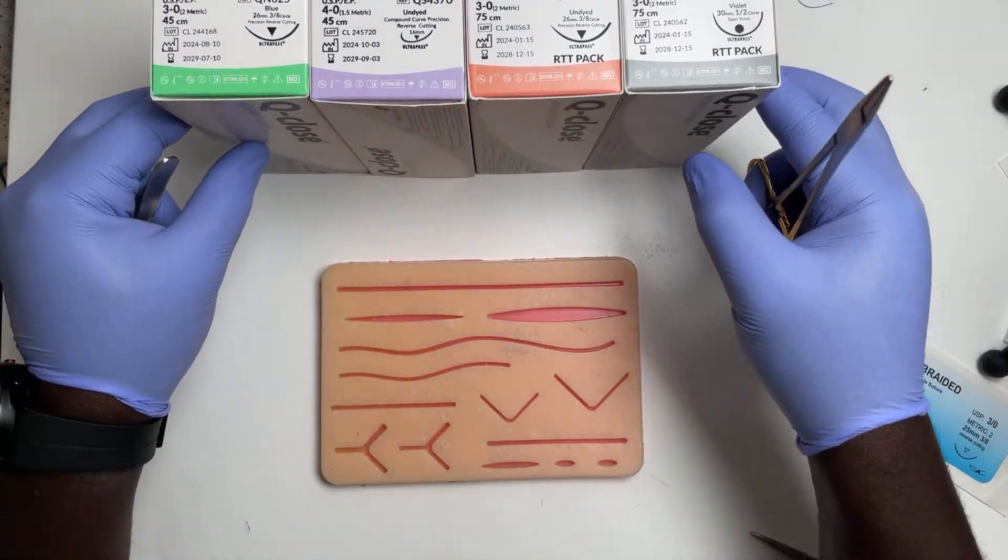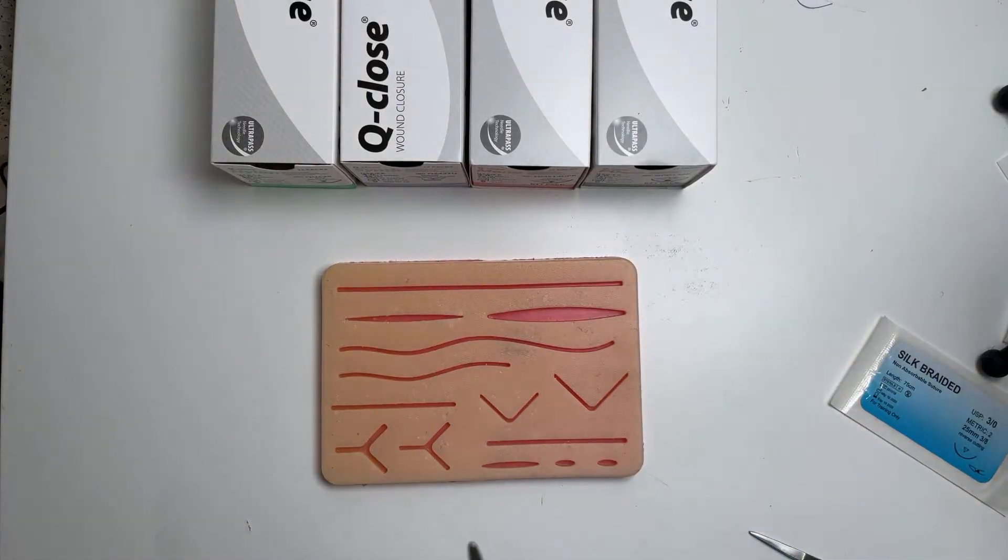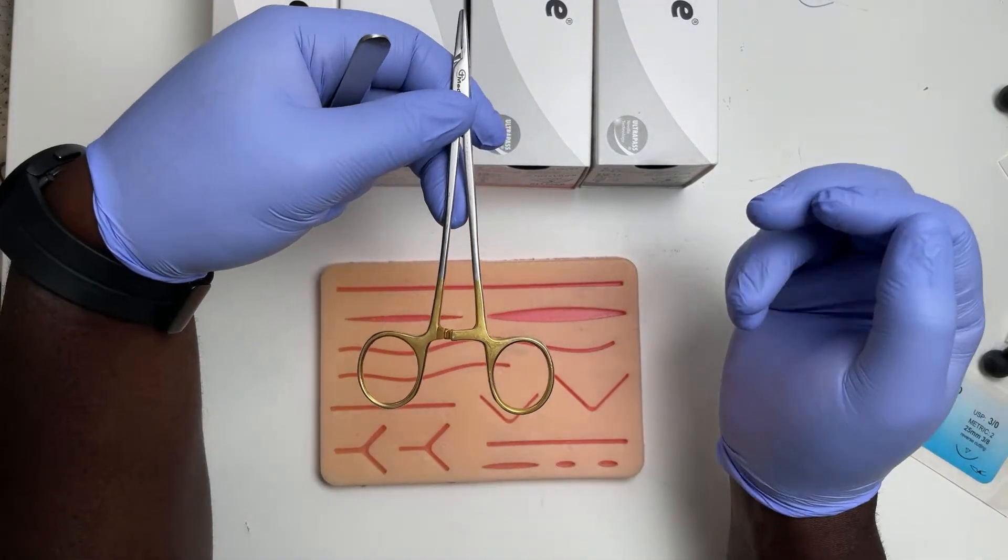We need to start with our basics. Our basics is the interrupted stitch. To do that, we have to hold our instruments.